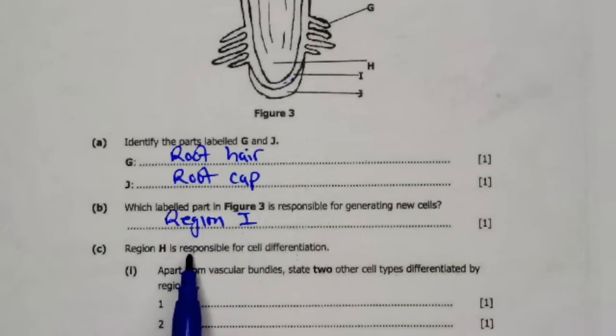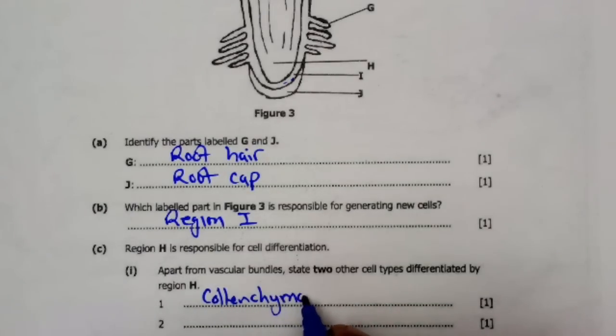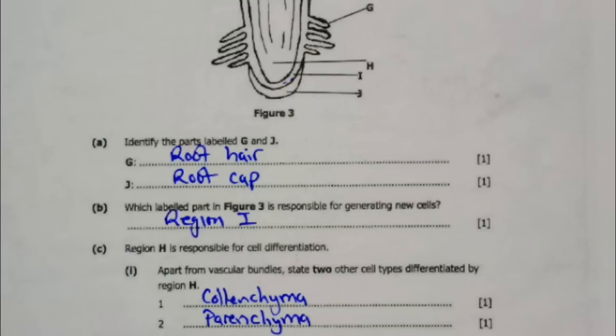Part C: Region H is responsible for cell differentiation. C1: Apart from vascular bundles, state two other cell types differentiated by region H. We have collenchyma tissue and parenchyma tissue. We have so many differentiated cells, but we'll only mention two.